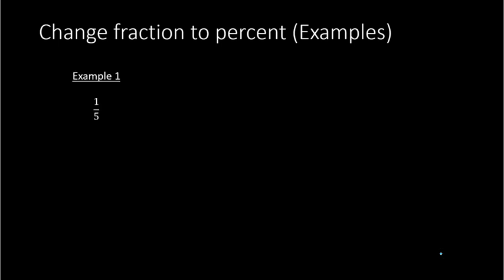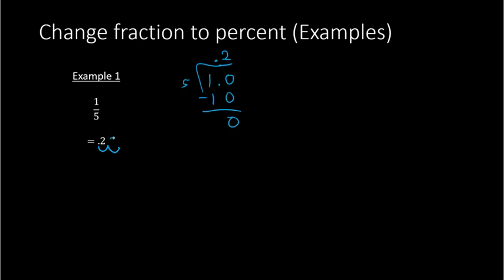Let's try some examples. Example one: we have 1 over 5. Using method one, we divide one by five. Adding a decimal point and a zero, five goes into ten two times, giving us 0.2. As a percent, we move the decimal point two places to the right — one place takes us after the two, and we add a zero to go one further — so we get 20, or 20%.